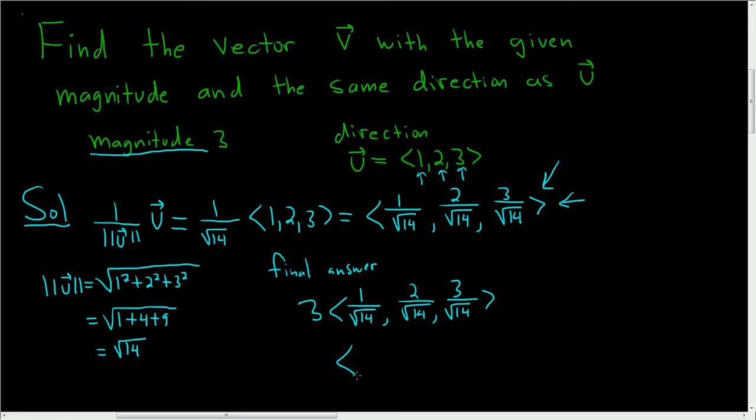And let's go ahead and multiply the 3 through. So this is 3 over the square root of 14, 3 times 2 is 6, so we get 6 over the square root of 14, and then 3 times 3 is 9, so we get 9 over the square root of 14. And that is the final answer.